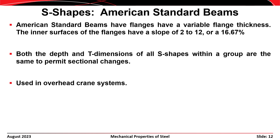A second type of I-shape section is the S-shape or standard shape. American Standard beams have flanges that are variable in thickness—the inner surface has a slope of 2 to 12, or 16.67%. Both the depth and T dimensions of all S-shapes within a group are the same to permit section changes. These are used mostly in overhead crane systems and won't appear often in this class.